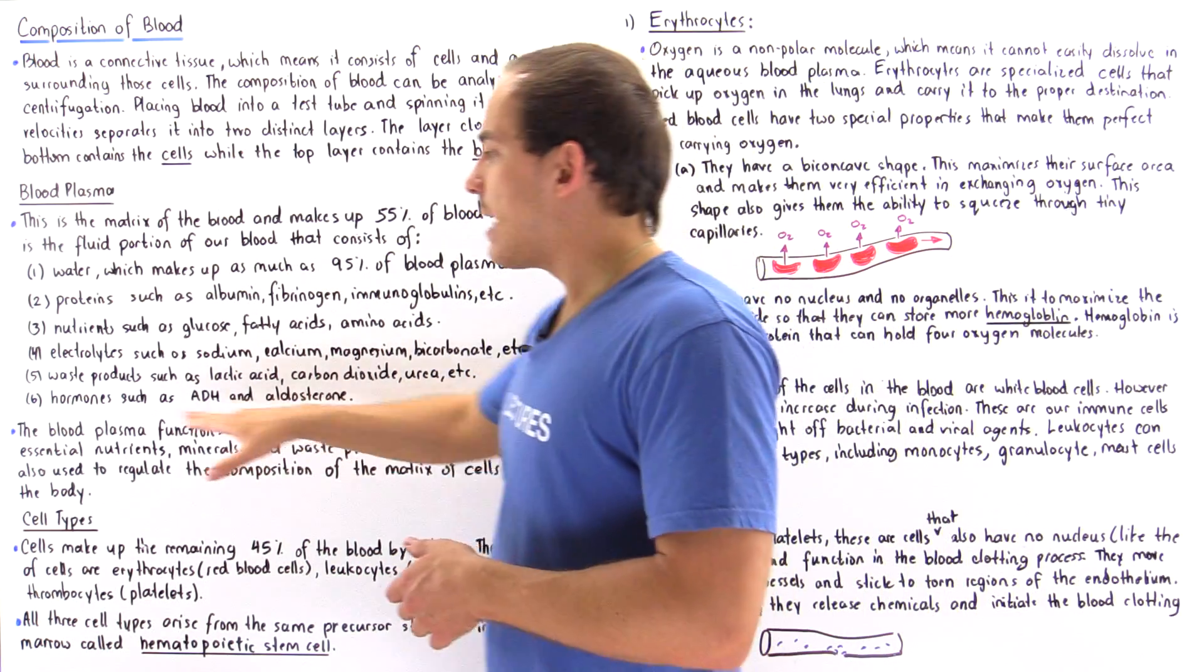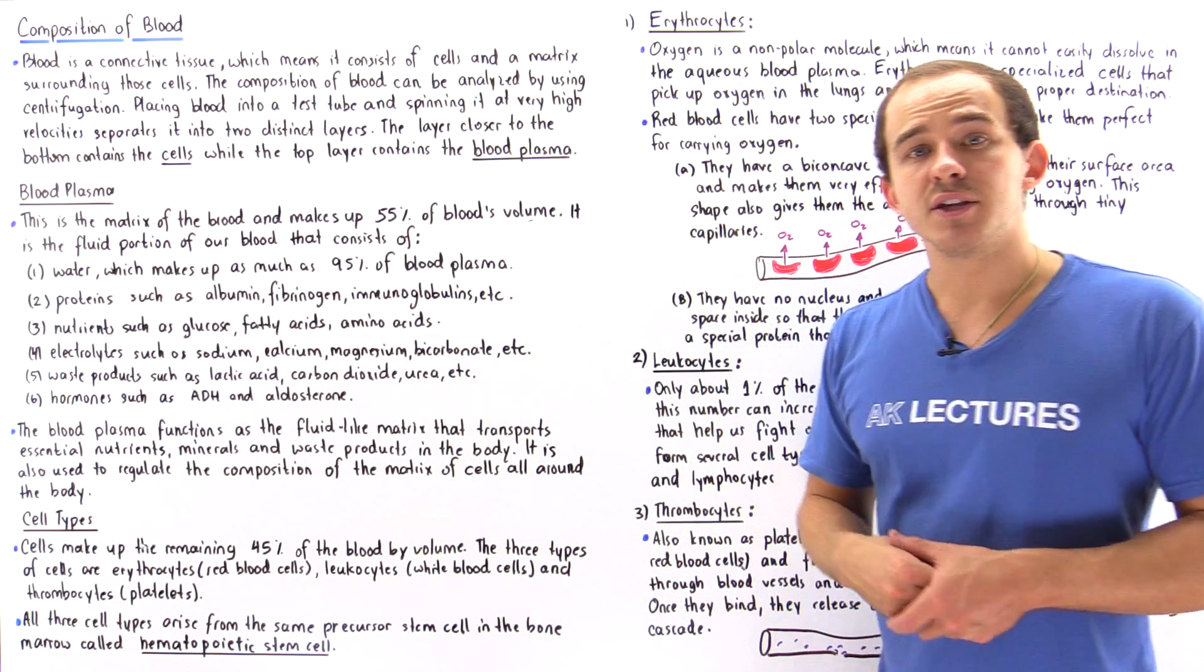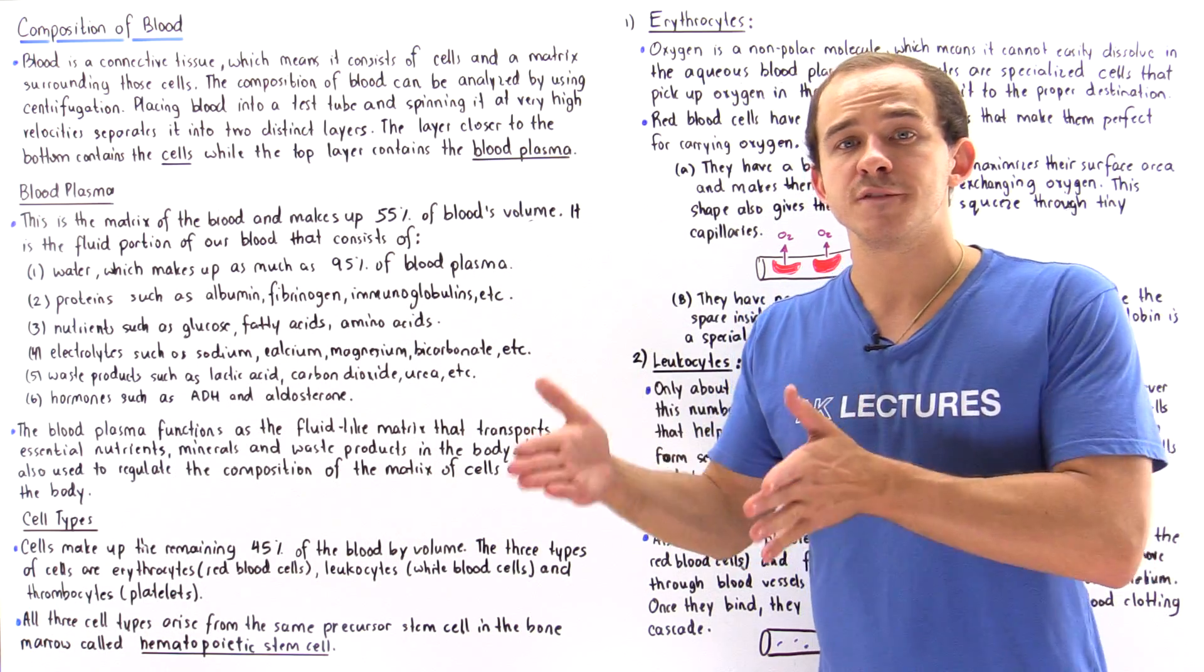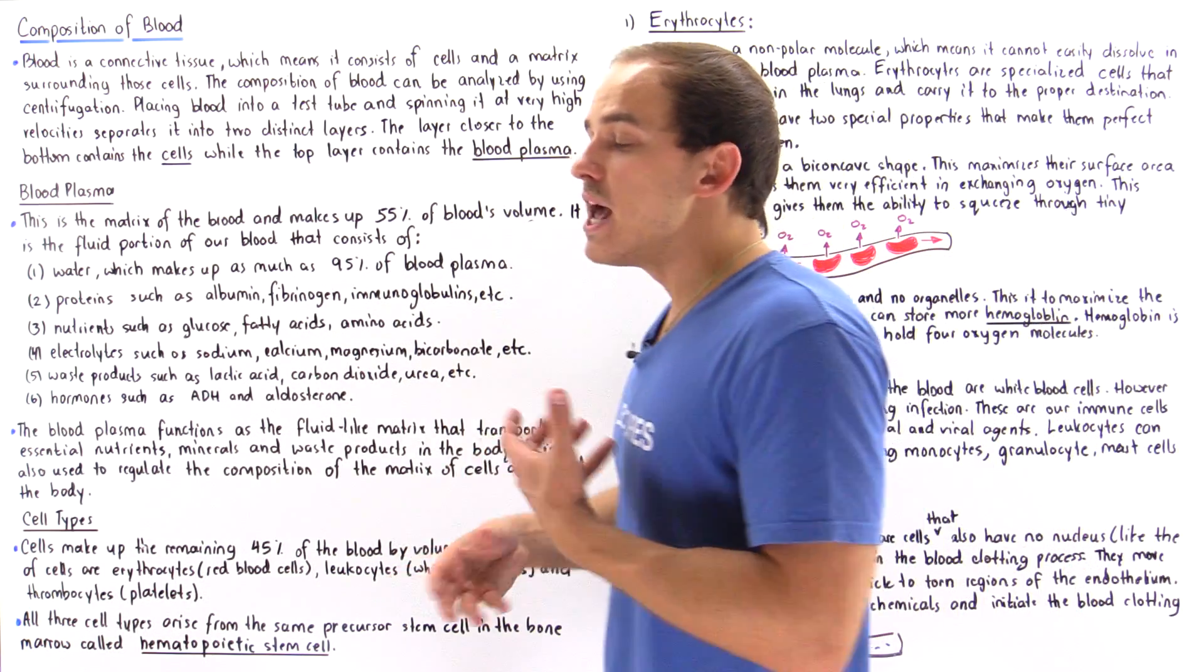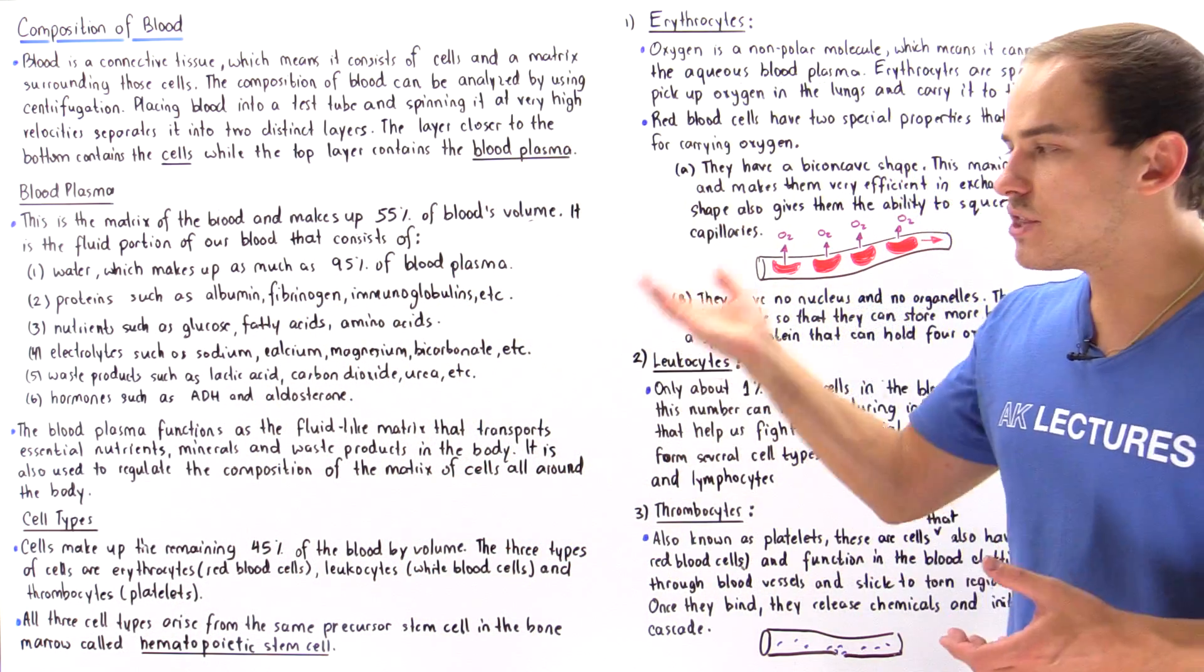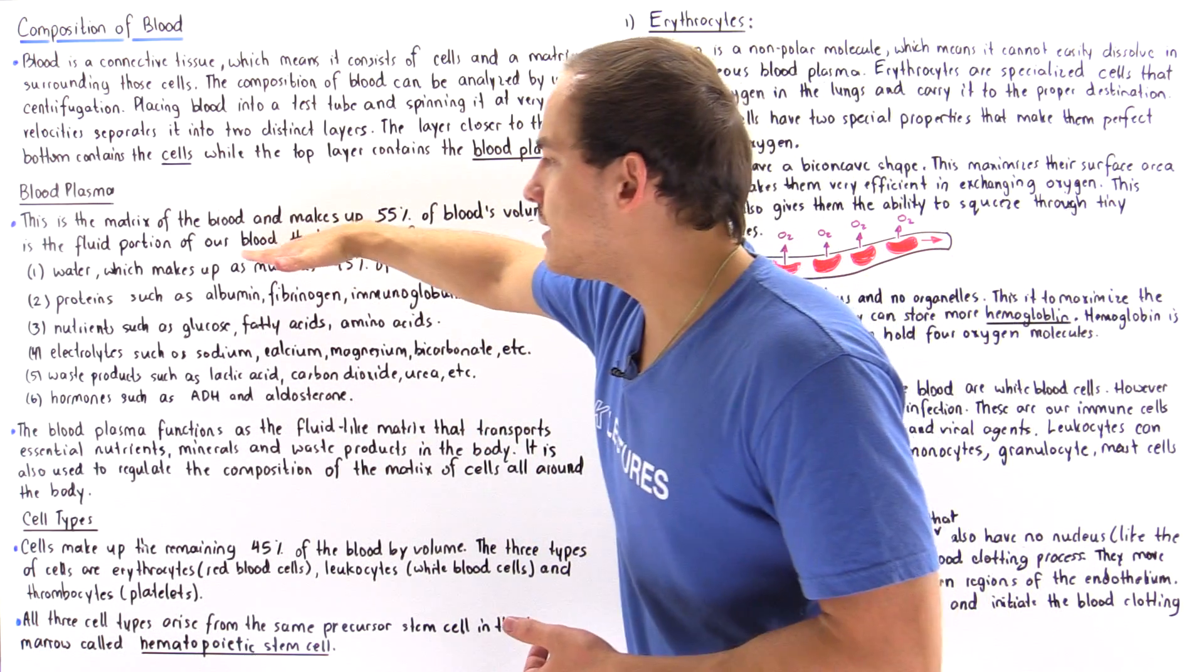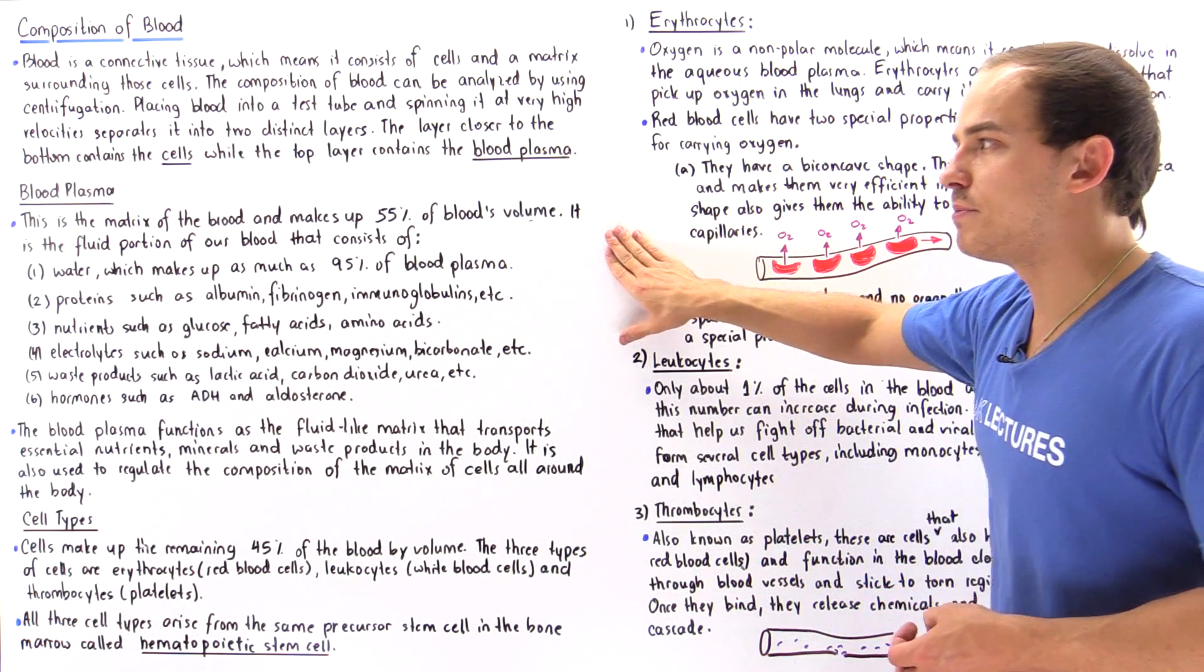Now what about number six, hormones. So hormones are those biological molecules that travel inside our blood from one point to a different point in the body. And they are basically used to regulate many different types of processes. Two examples of hormones are ADH, the antidiuretic hormone and aldosterone. So these are the major constituents that are found in the blood plasma.